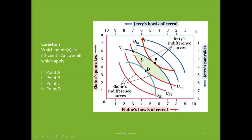Let's go through this point by point. For point A, we can see there are points up and to the right of Elaine's indifference curve and down to the left of Jerry's indifference curve, so point A is not an efficient allocation. For point B, this appears to be a point of tangency between Elaine's and Jerry's indifference curves, so point B is exchange efficient. For point C, we're not given enough information — the indifference curves through this point are not shown — so we cannot determine whether it is exchange efficient. Point D is another point of tangency between Jerry's and Elaine's indifference curves where both have the same marginal rate of substitution, so point D is exchange efficient.